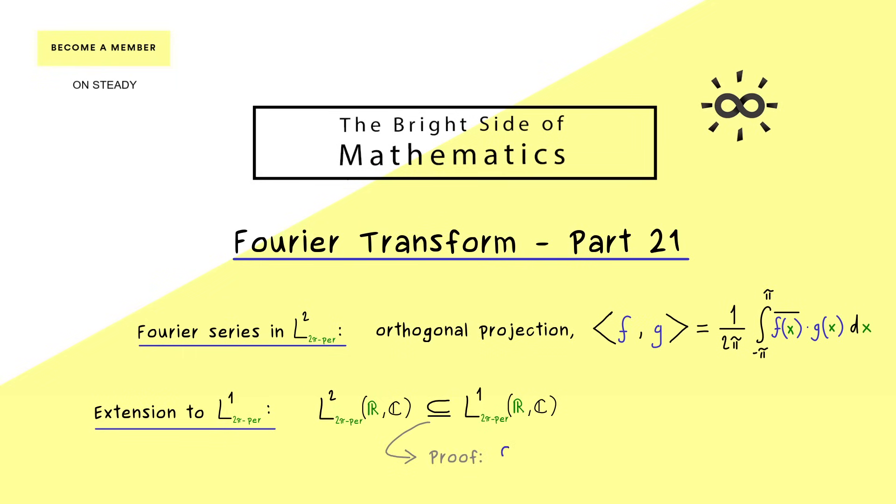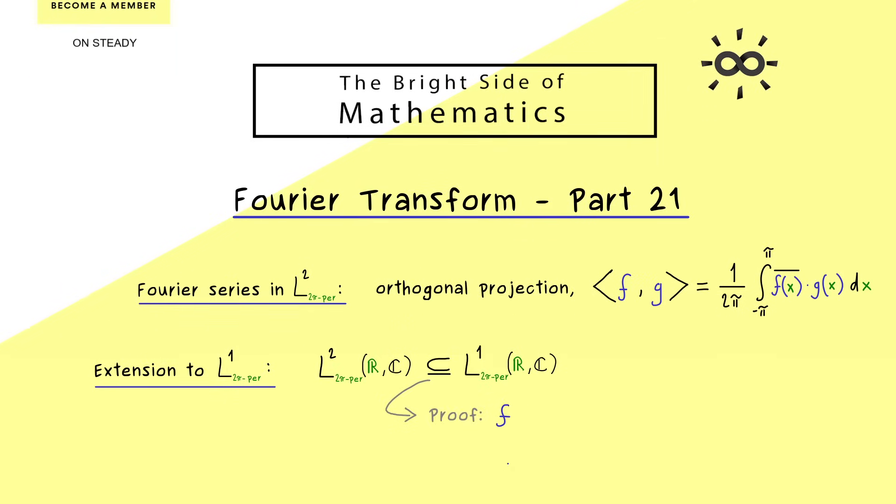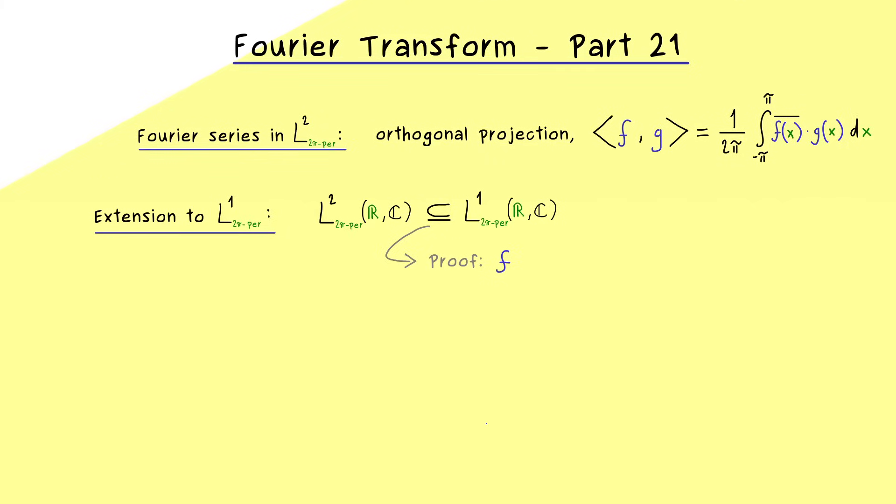So what we need to show is that a function from L2 also lies in L1. First we can take the fact that f is square integrable which means we can use our inner product. Moreover for the second input in the inner product we can use a constant function. So this denotes the function that is 1 everywhere so it's definitely also square integrable over the interval from minus π to π.